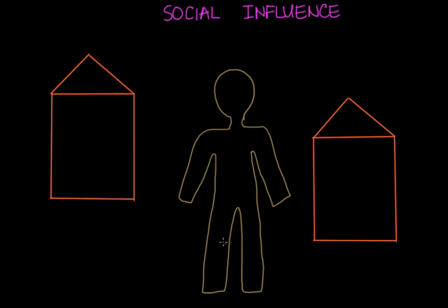Here's our individual, and these houses represent the social groups, or society, in which the individual interacts. Imitation is the first topic we're going to look at, and it's referred to as a type of individual social influence. Imitation is basically one of the most basic forms of social behavior — it's when we're copying someone else.